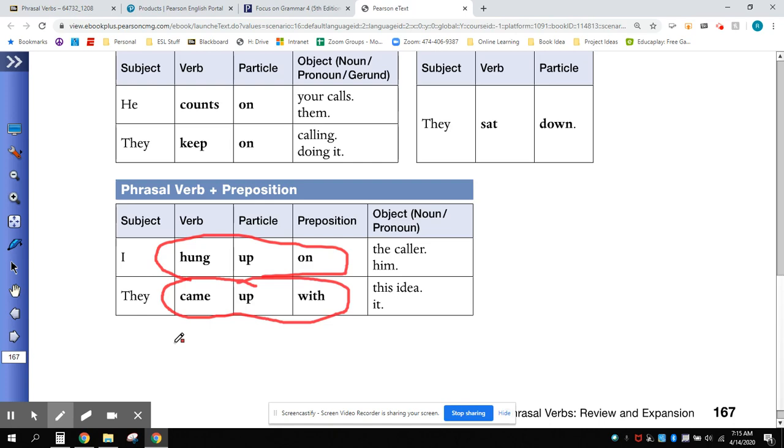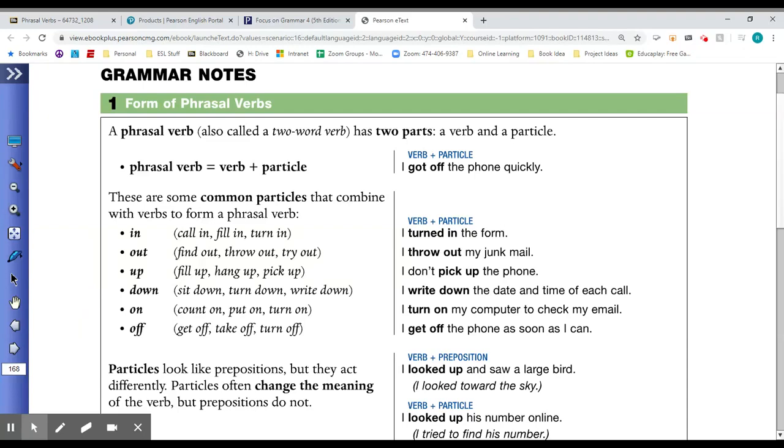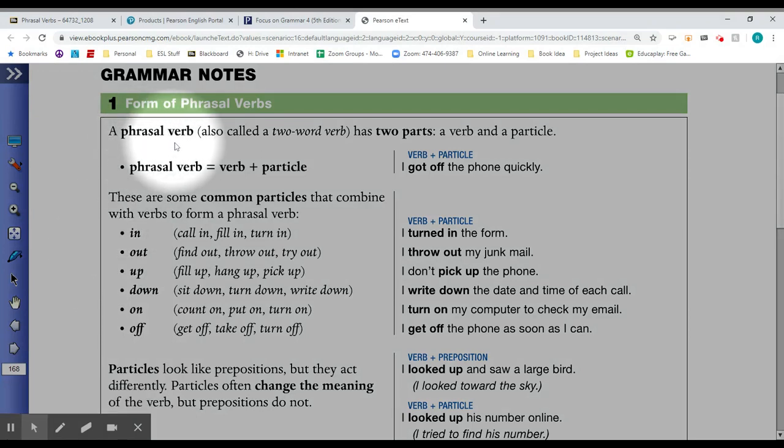Hung up on, or to hang up on, to come up with. More information on the form of phrasal verbs. As I mentioned before, a phrasal verb has two parts, the verb and the particle. In the sentence, I got off the phone, the verb 'get' plus the particle 'off' form the phrasal verb to get off. As you can see, the sentence is in the simple past tense, I got off the phone quickly.